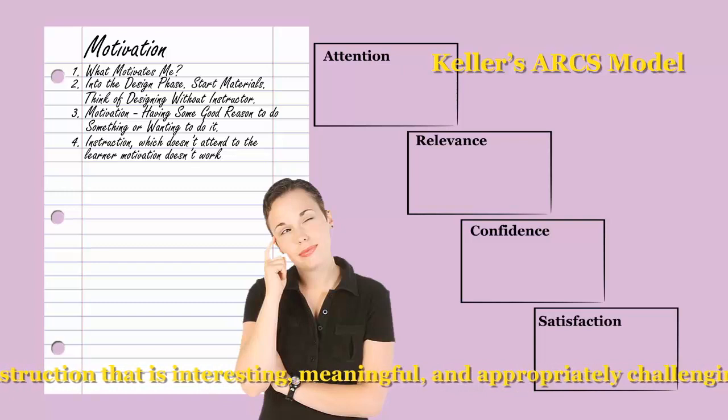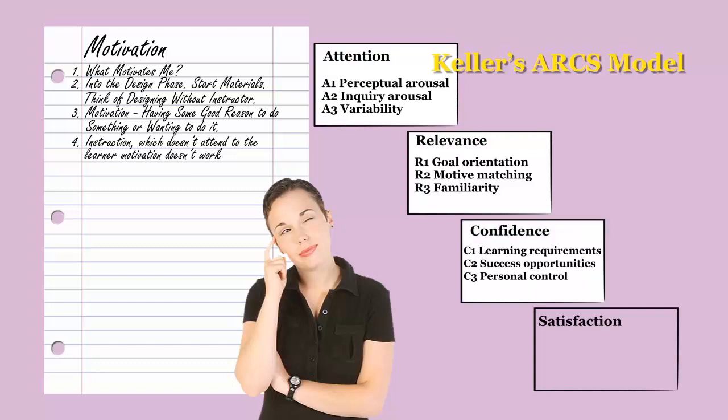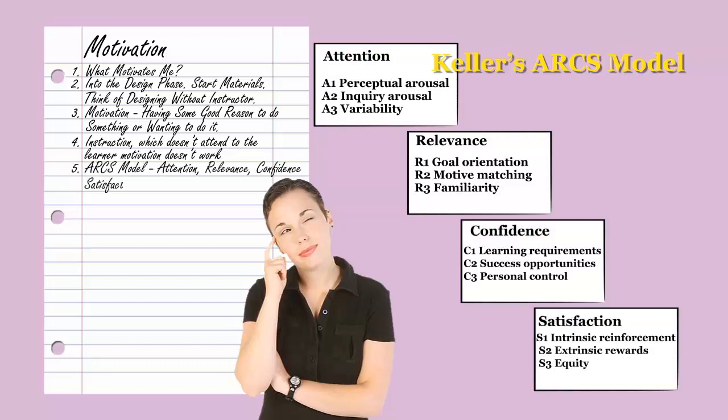Keller suggests that this can be done in a systematic way, and he developed what's come to be known as ARCS model. As a model to be used for influencing learners, ARCS looks to four major areas: attention, relevance, confidence, and satisfaction. We'll want to consider ARCS model as we develop our instruction.